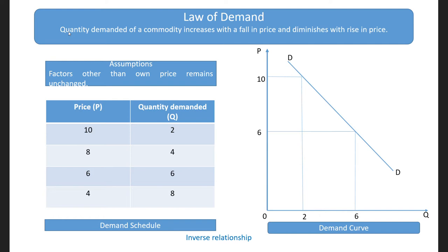According to this law, other things being equal — where other things imply other factors except its price which determine demand — the law states that price of a commodity and its quantity demanded move in the opposite direction. Thus, when price falls, quantity demanded increases, and when price increases, quantity demanded falls.